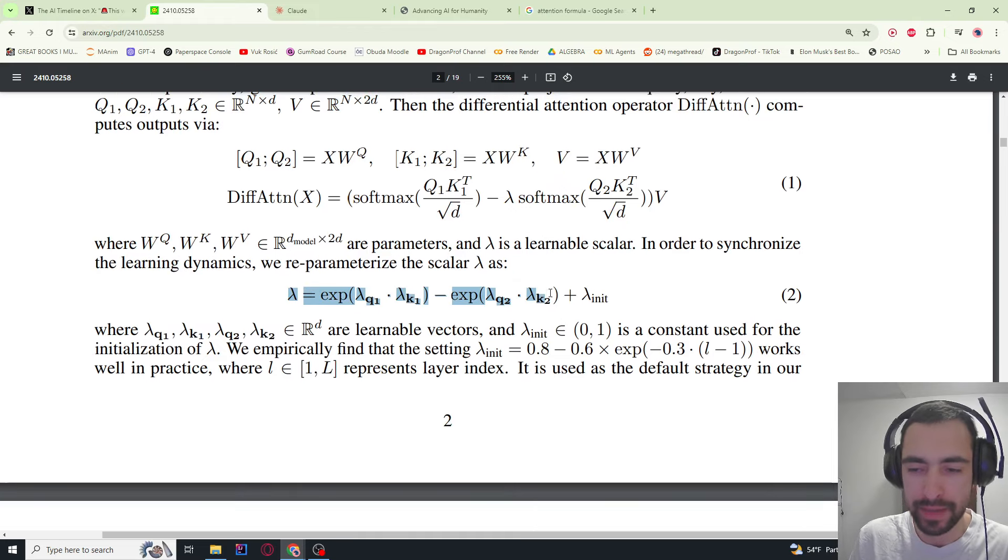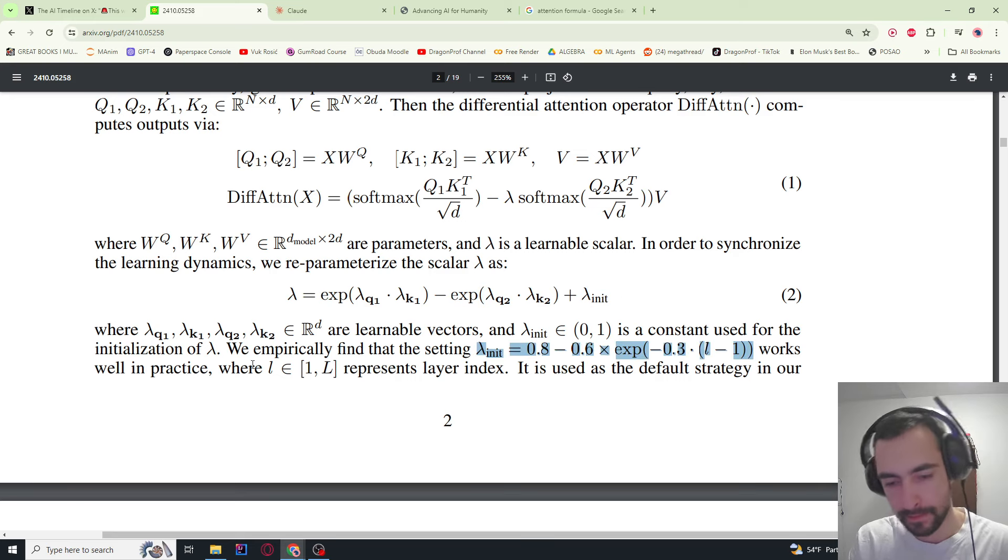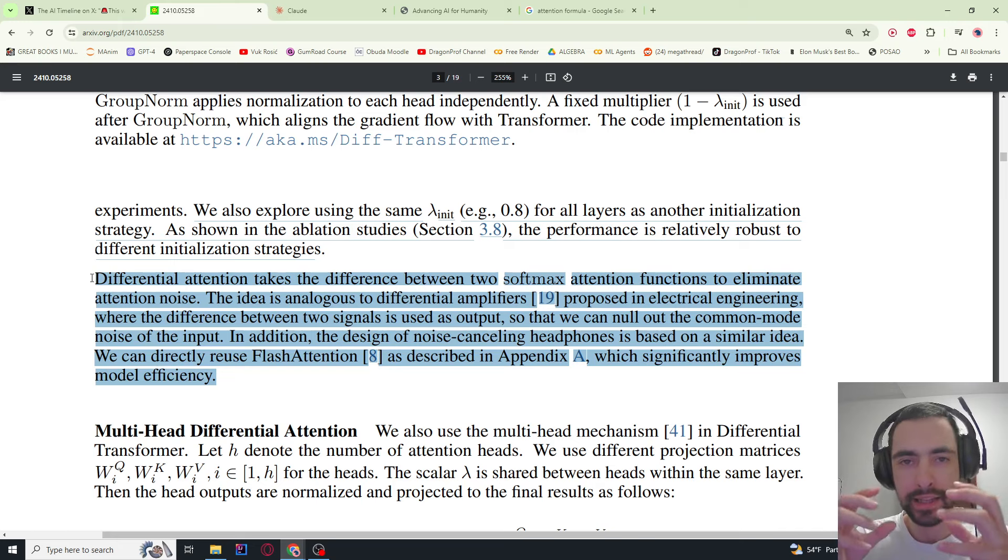They made lambda a bit more complex, so they put e to the minus e to this. This is Q1, Q2, and then this initial value of lambda. They found that these particular values were good in initialization and practice, and the reason they made lambda more complex is so that model can learn more complex structures from the data. This idea that they are explaining where they take a difference between two different softmax attention functions to cancel out the noise, they took this from electrical engineering where they design noise-canceling headphones. They also take difference between two functions of noise, and then all of the noise, the same values, are going to cancel out and only the signal will remain.